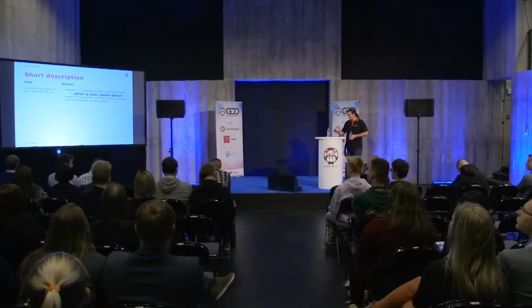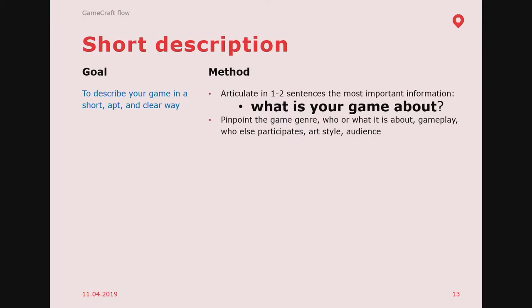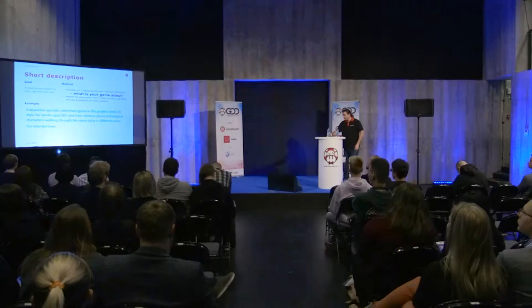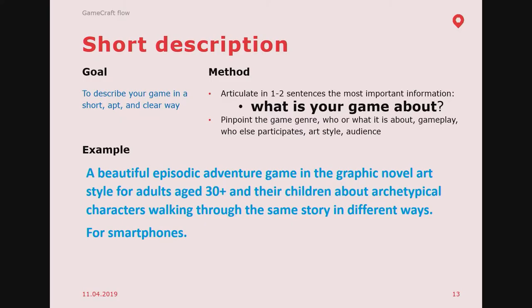And here's the final step: the short description. You use your skills to pack everything — core pillars, features, game description — into one, up to two sentences. It's like a five-second elevator pitch. Here's what we got: 'A beautiful episodic adventure game in a graphic novel art style for adults aged 30-plus and their children, about archetypical characters walking through the same story in different ways — for smartphones.' That's how you pack the game. Steam curator reviews packed in 160 symbols are a good reference for this kind of writing.